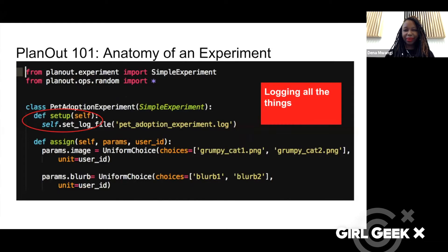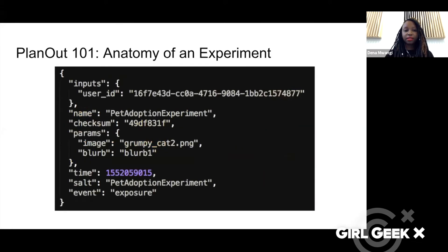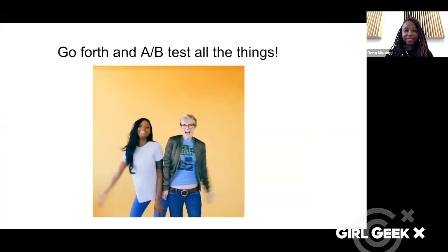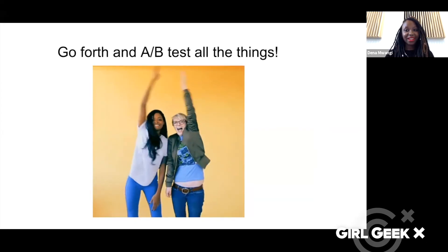But okay, you did the thing — where's your data? All you have to do is tell it how to do the logging in your setup: tell it where you want to log things, what file you want to send it to, whether or not you have a data pipeline. You can throw it into a JSON. As people flow through your website and are randomly assigned to a variation, all of this gets logged into a JSON that lets you see what image and blurb each user was assigned, along with who they are and what time it was. And that really is it — that's your first experiment, and you're ready to go forth and A/B test all the things.